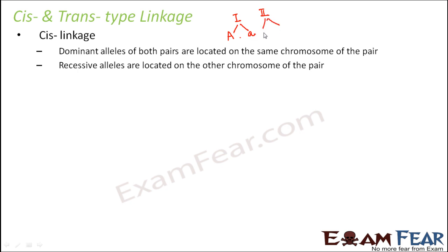The second gene is B, for which you have two alleles: capital B and small b. These are the two linked genes. When we say gene 1 and gene 2 are linked genes, that means when we talk about linkage maps, they are located very close to each other. The more close they are located, the more linked they are.